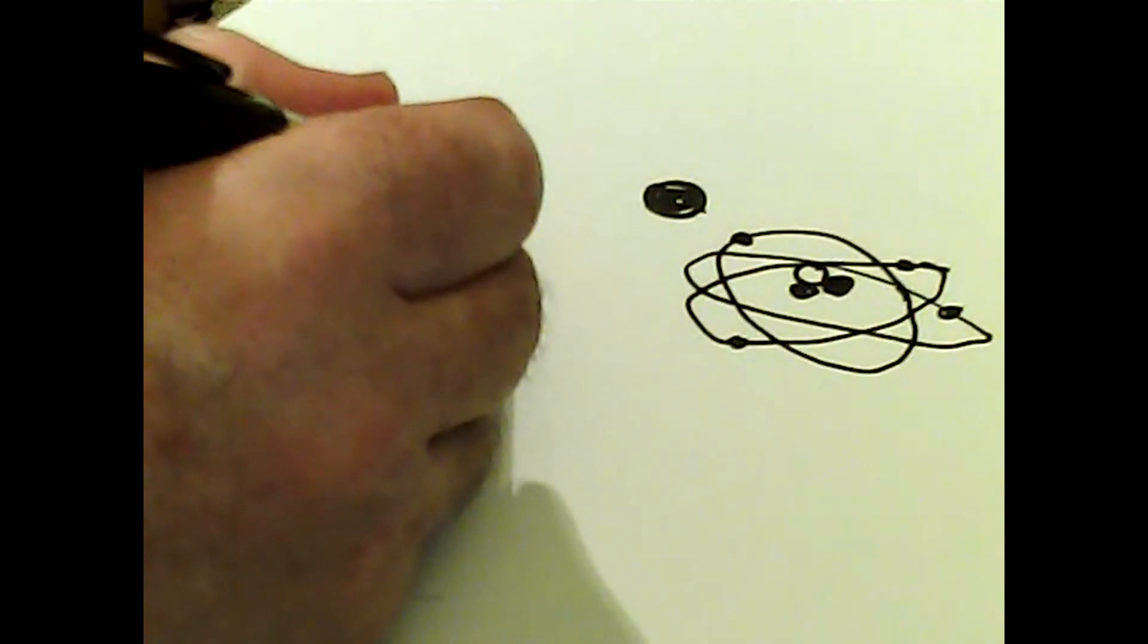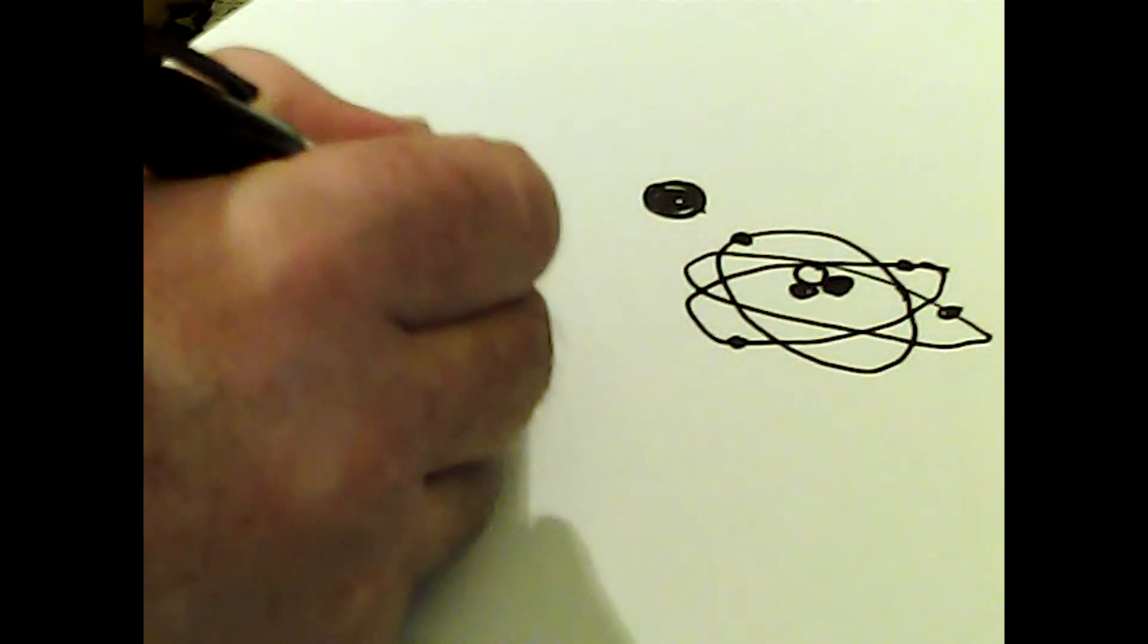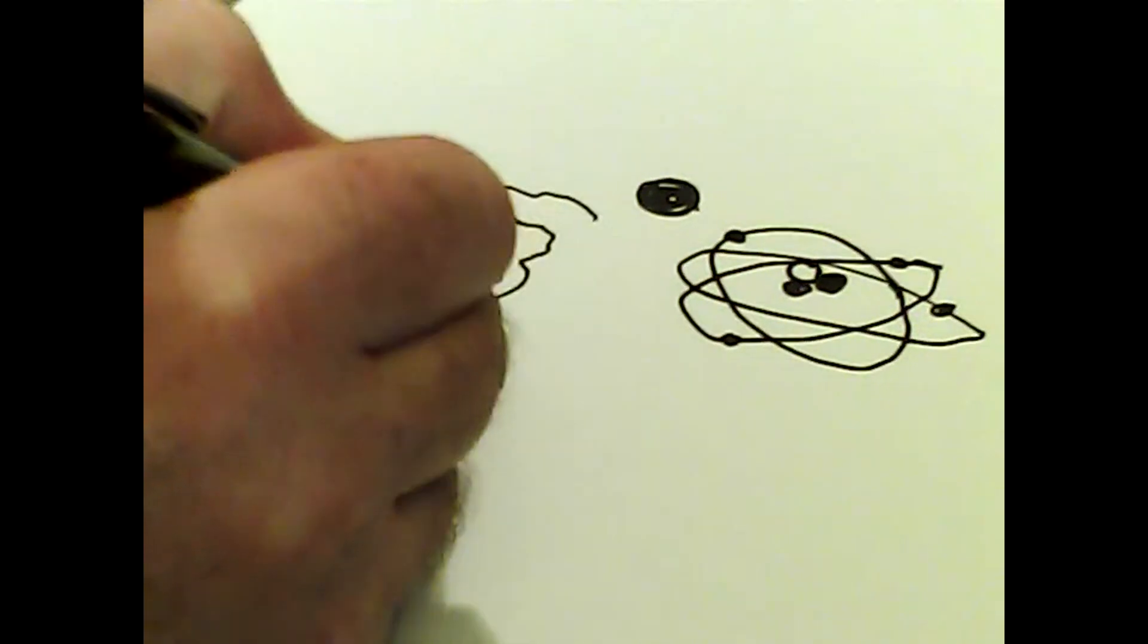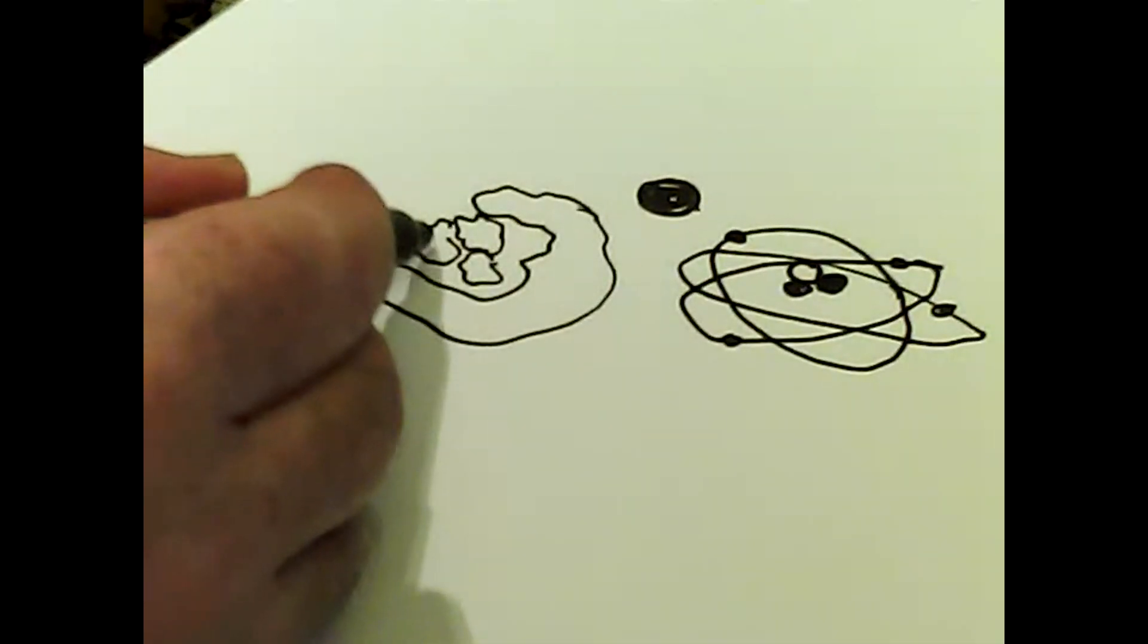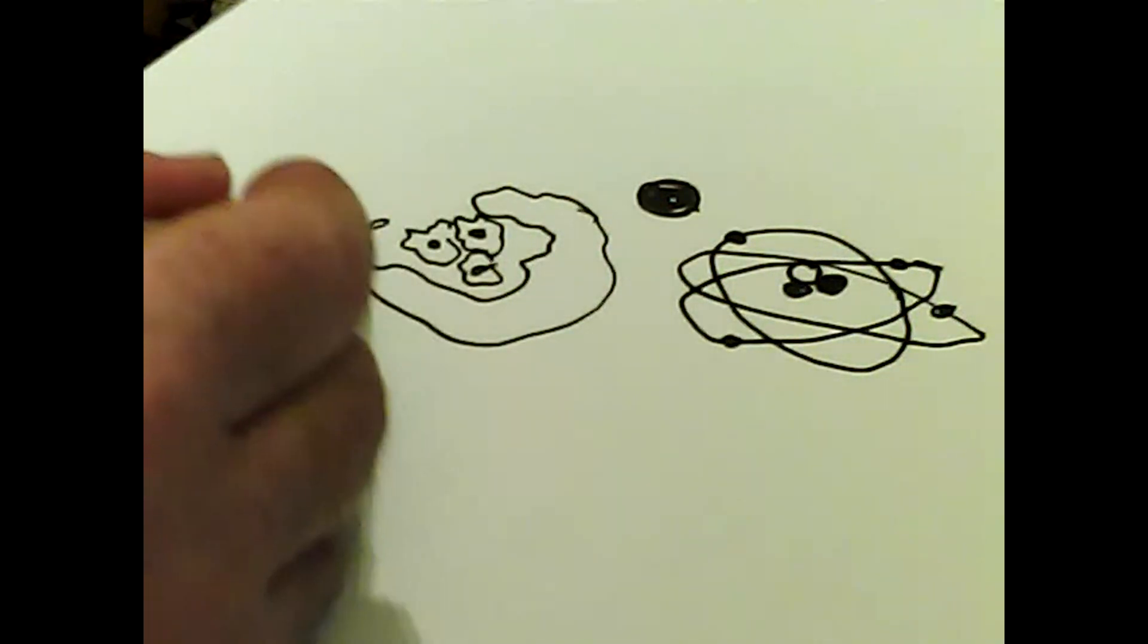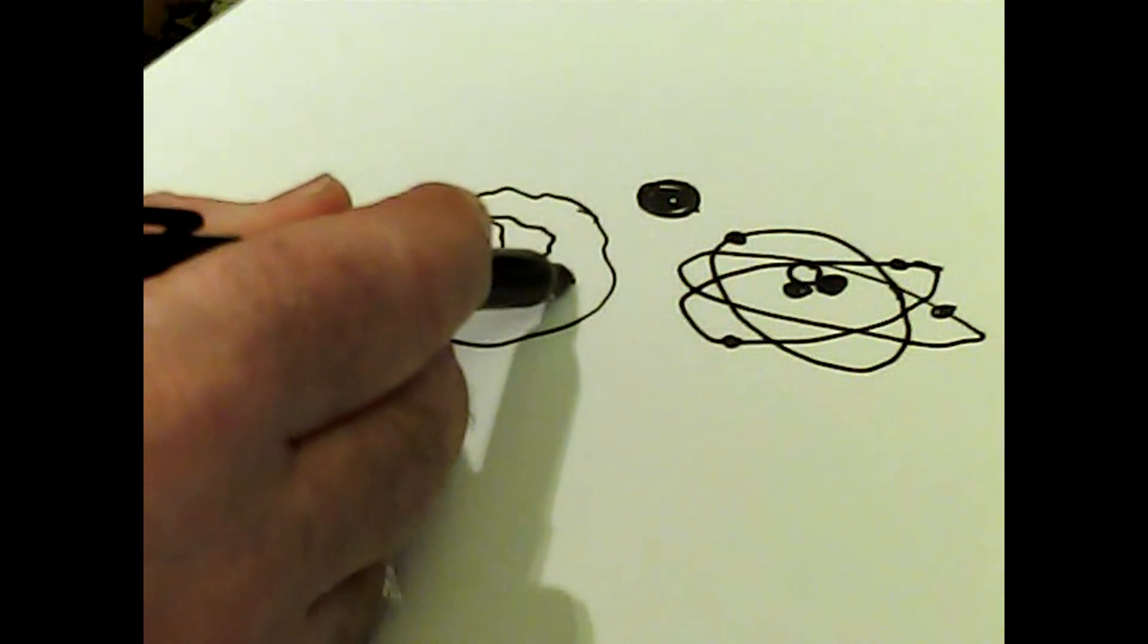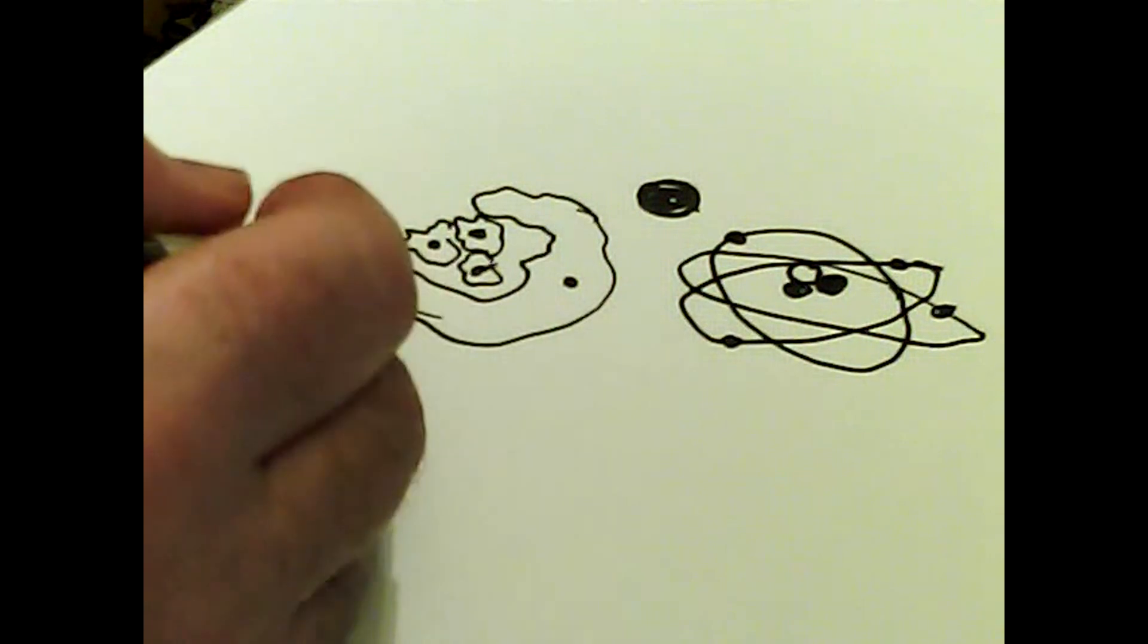And nowadays even kids in school are taught that this is not the way things are. Instead what you have is these areas like this, and around here you might have this funny shape like that. And you know that somewhere in here there'll be a neutron, somewhere in here there'll be a proton, somewhere in this strange three-dimensional shape here there will be an electron.